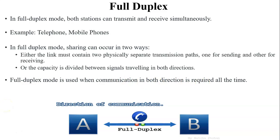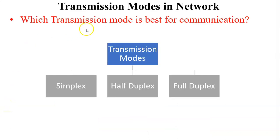Full duplex mode is used when communication in both directions is required all the time. After discussing these three transmission modes, I have one question: which transmission mode is best for communication? Tell me your answer in the comment section. If you cannot find the answer, watch the next video on comparison of transmission modes. Thank you.